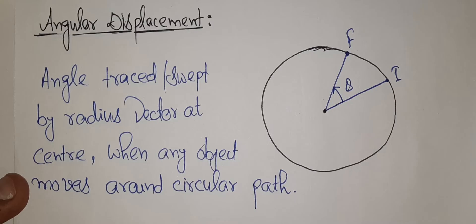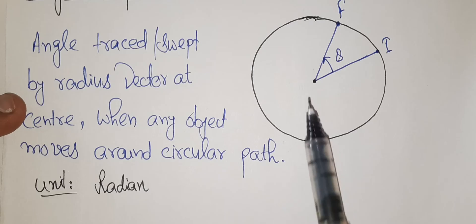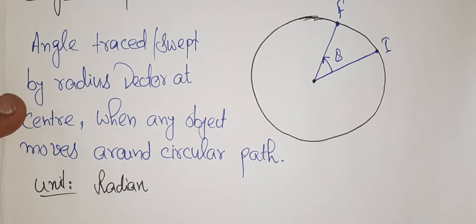The units for angular displacement: the standard unit is radian. Now, which type of quantity is this? Angular displacement is a vector quantity — but with a condition.